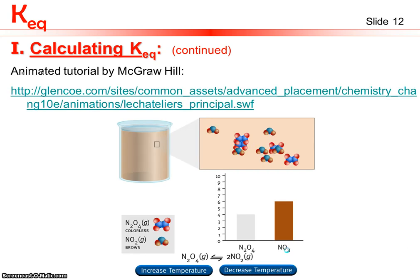We can look at a McGraw-Hill animation at a referenced website, plug in a temperature change, and observe the concentrations of each reactant and product. We can see how the system shifts to adjust for a temperature change, and confirm by plugging new numbers into the equilibrium expression that KEQ increases or decreases depending on which direction equilibrium is shifting.